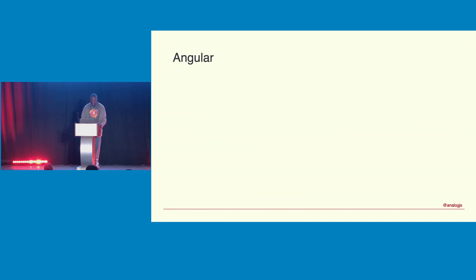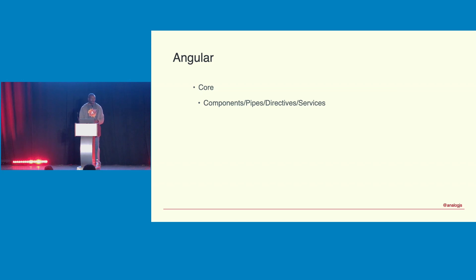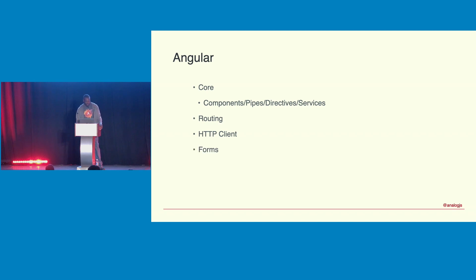Angular itself is a framework with its own core. The core pieces of Angular applications are components, pipes, directives, and services. For other parts of the framework, there's also routing for navigating between pages, an HTTP client, forms for managing data input, SSR for server-side rendering, and more — Angular has quite a lot of parts.